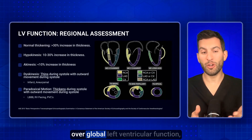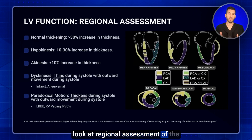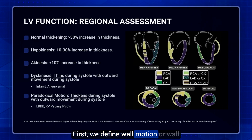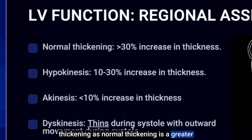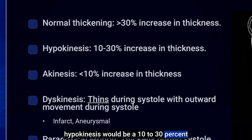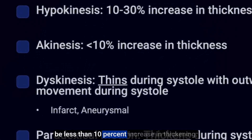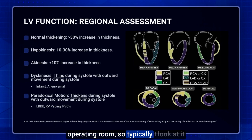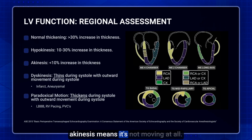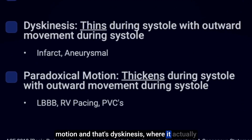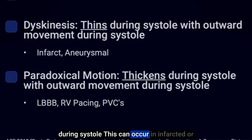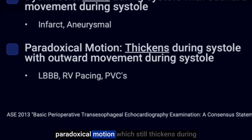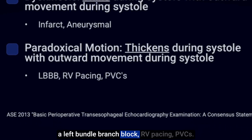There are two ways to assess regional LV function or wall motion abnormalities. Normal thickening is defined as greater than 30% increase in thickness. Hypokinesis is a 10 to 30% increase, and akinesis is less than 10% increase. In the operating room, practically: normal means it moves normally, hypokinesis means something looks wrong and it's not moving normally, and akinesis means it's not moving at all. Dyskinesis is when tissue thins with outward movement during systole, occurring in infarcted or aneurysmal tissue, contrasted with paradoxical motion — which still thickens but moves outward — seen in left bundle branch block, RV pacing, or PVCs.